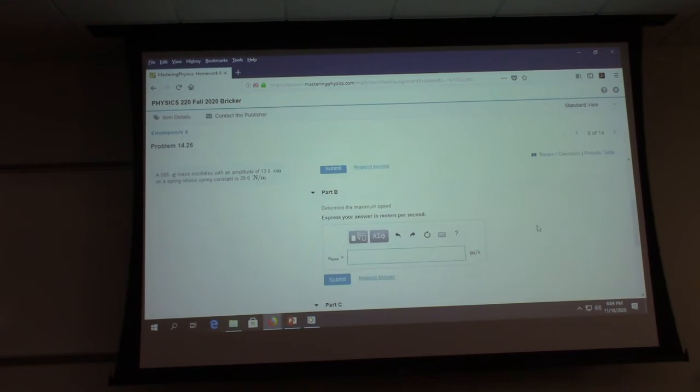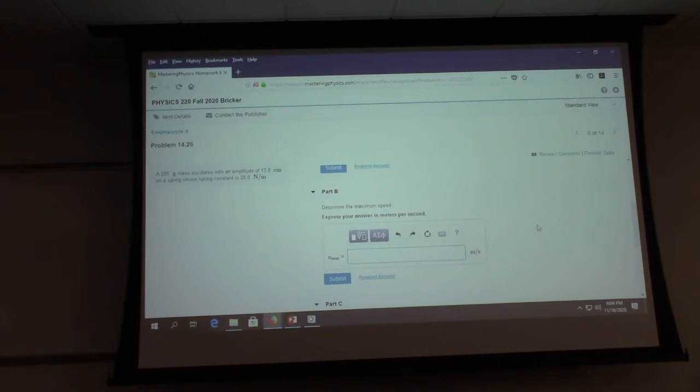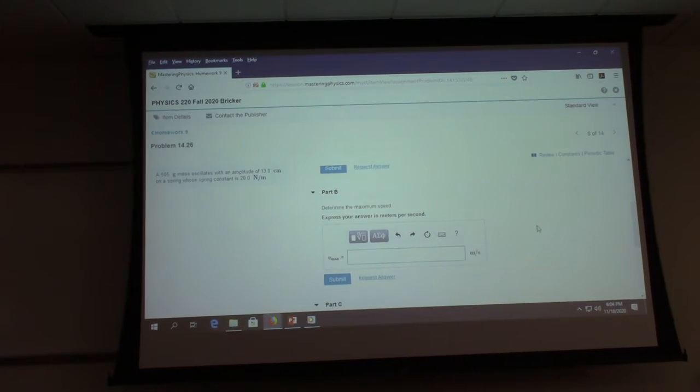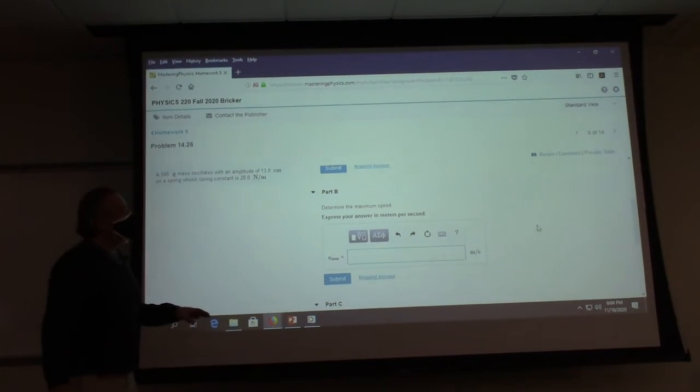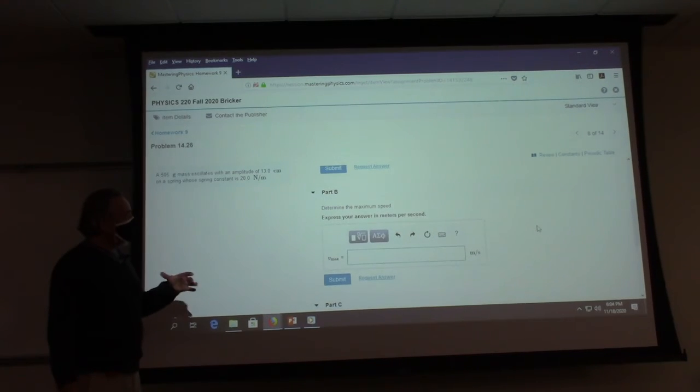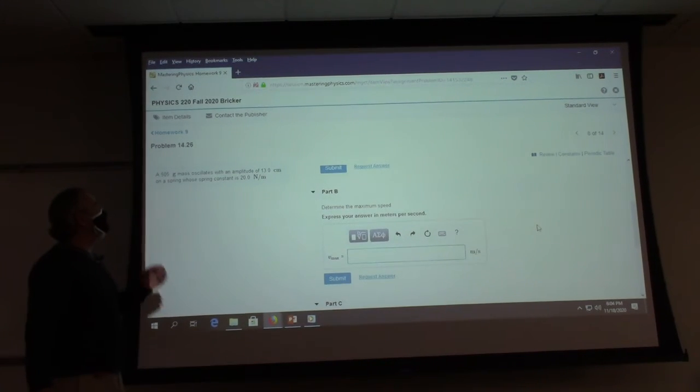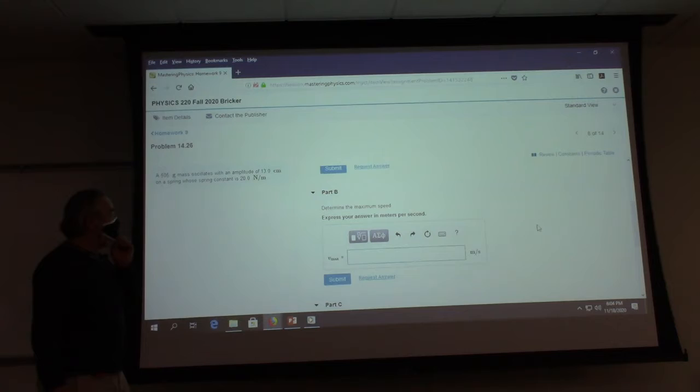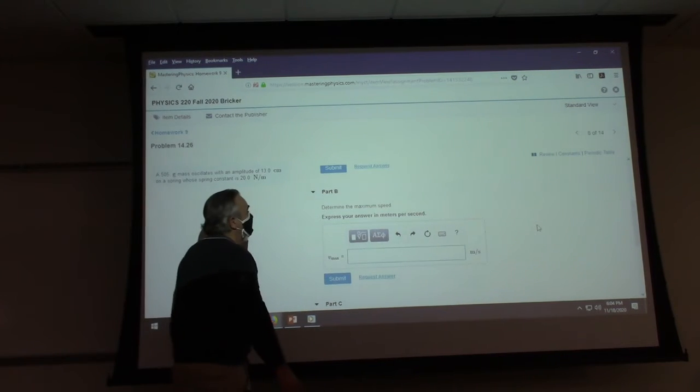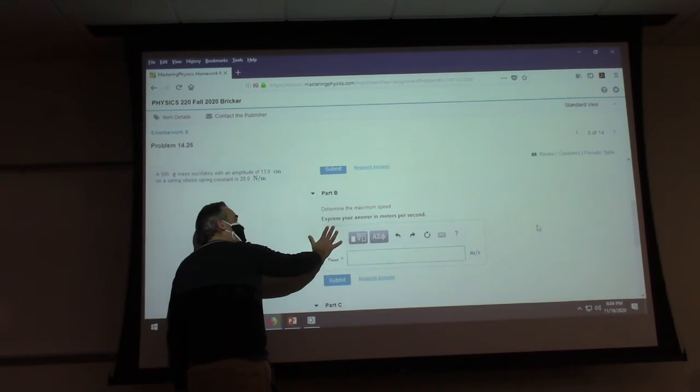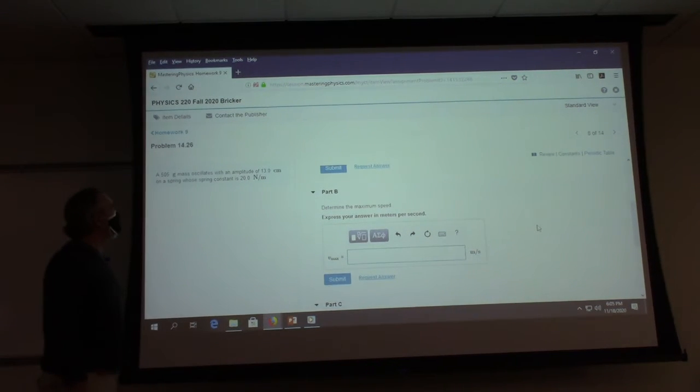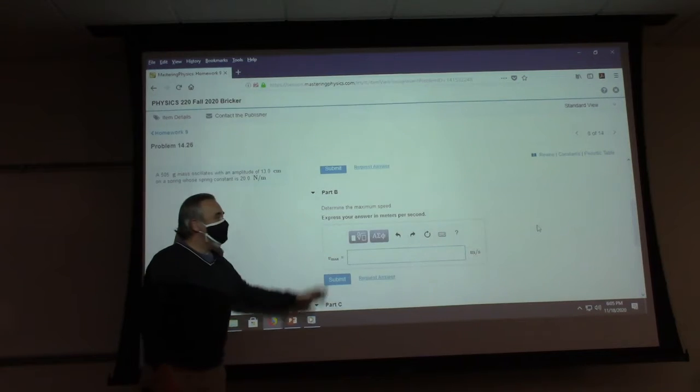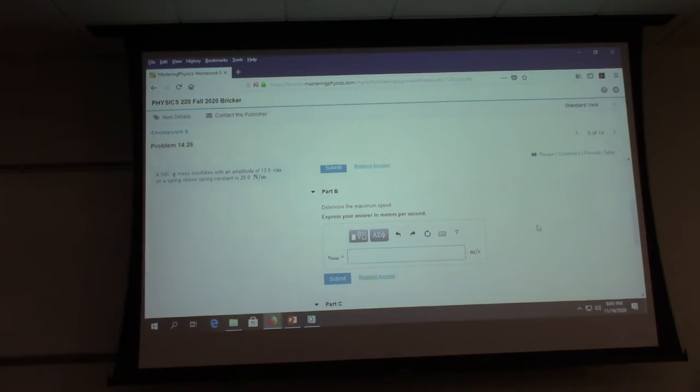Part b, determine the maximum speed. So there's a couple of ways of getting the maximum speed. We have the formula for maximum speed that we use. Two pi times the frequency times the amplitude. You can get the maximum speed that way. Another way of getting it though is knowing that all the spring potential energy becomes kinetic energy where the speed is a maximum. So let me show you how you can do part b without using that formula that we came up with doing it another way.